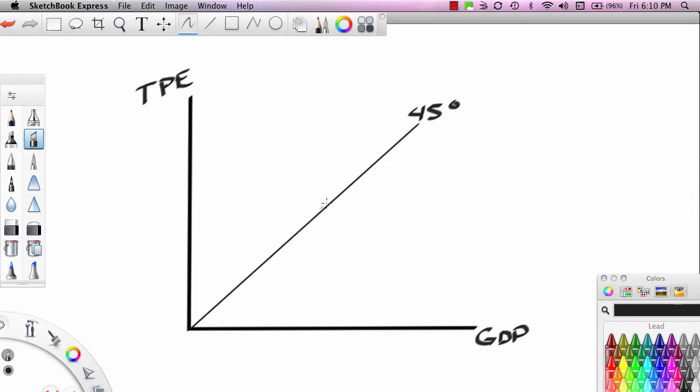And if you're at any point on this 45-degree line, TPE equals GDP, which means the macroeconomy is in equilibrium. So the 45-degree line represents the case where GDP equals TPE. And as we've discovered earlier in our studies, not in these videos, but in your study of macroeconomics, you should have already come across the idea that if GDP equals TPE, the macroeconomy is in a state of balance.